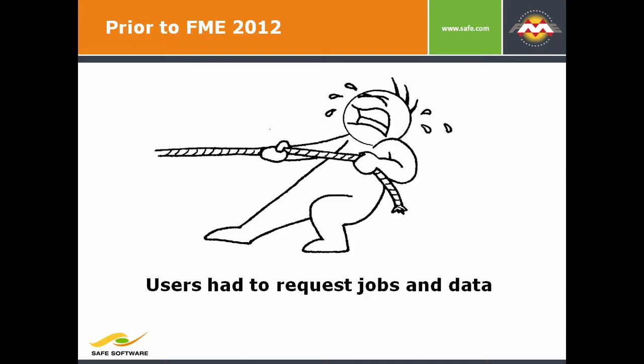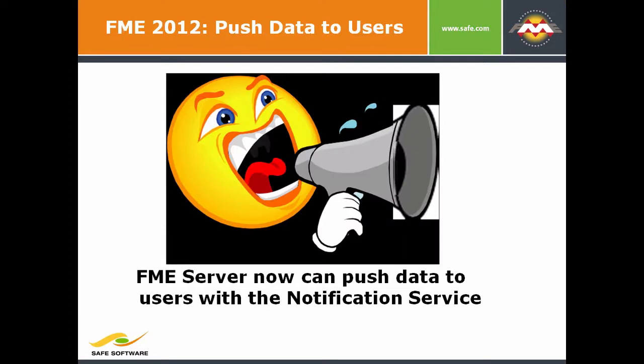Users had to request jobs and data manually. We added scheduling to give some automation, but that wasn't really enough. So in FME 2012 we've added this whole idea of pushing data through a notification service. With FME 2012, it's very easy to set up workflows where an event happens, users publish some data to a topic to signify that event, and then one or more operations push data in a variety of ways to users. In a pull environment, it's up to users to ask for things. With push now, the FME Server pushes data of interest to users so they no longer have to look for it.